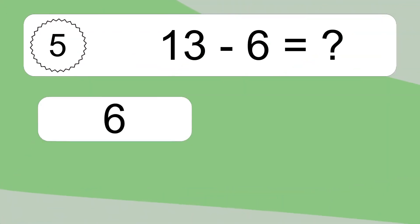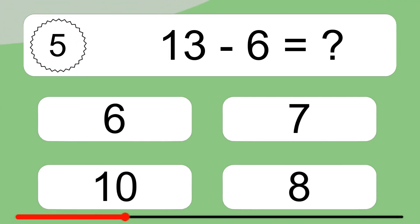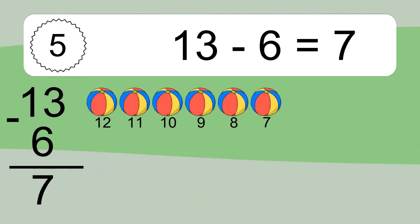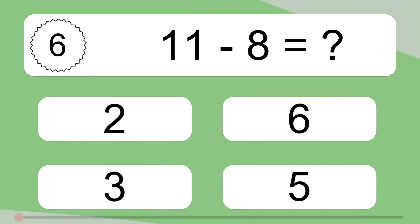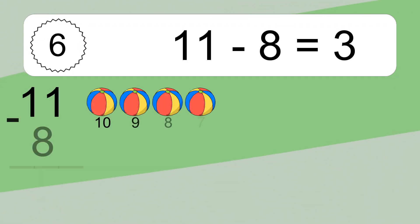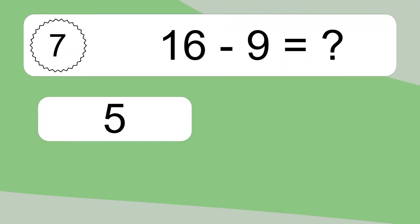13 minus 6 equals 7. Let's count it: 12, 11, 10, 9, 8, 7. 11 minus 8 equals what? 11 minus 8 equals 3. Let's count it: 10, 9, 8, 7, 6, 5, 4, 3.